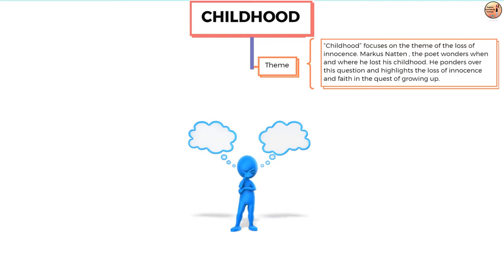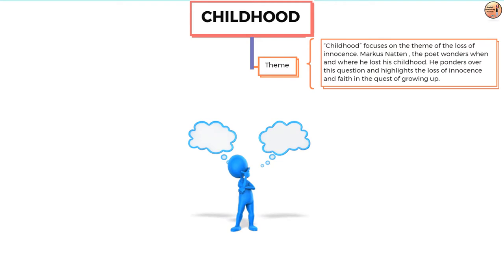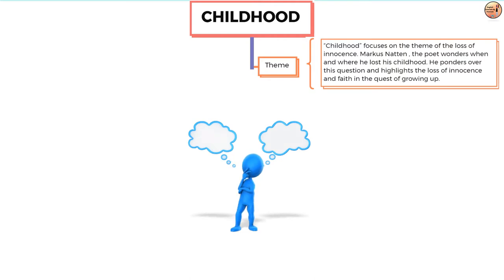He wonders whether it is the age or the stage when the young unsullied mind learns to see through the adult's hypocrisy and identifies his own distinctiveness. He finally finds his answer that he lost his childhood to some forgotten place and that his childhood has become a memory.